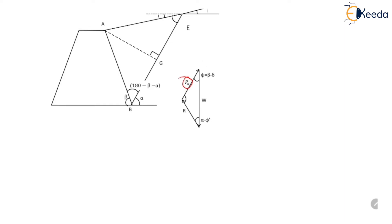Now we will derive the mathematical expression to determine the value of PA using the same theory. The angle made by the failure surface with the horizontal is alpha, and the angle made by the back of the retaining wall with the horizontal is beta. The middle angle ABE will be equal to 180 minus beta minus alpha. The surcharge angle I is the angle made by the slope with the horizontal, so the opposite angle also equals I.